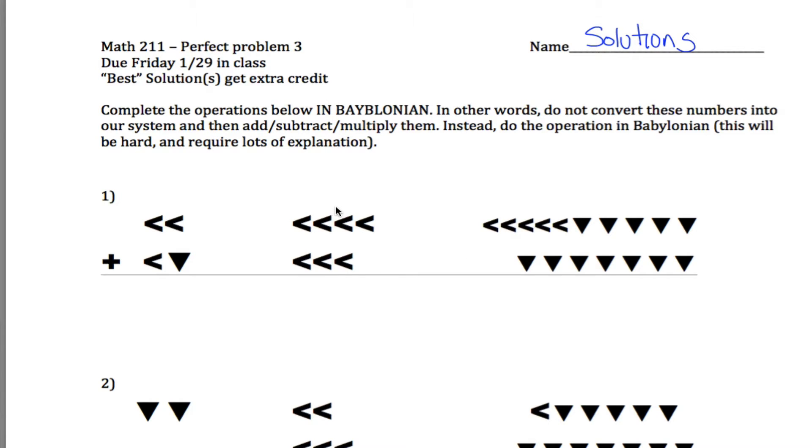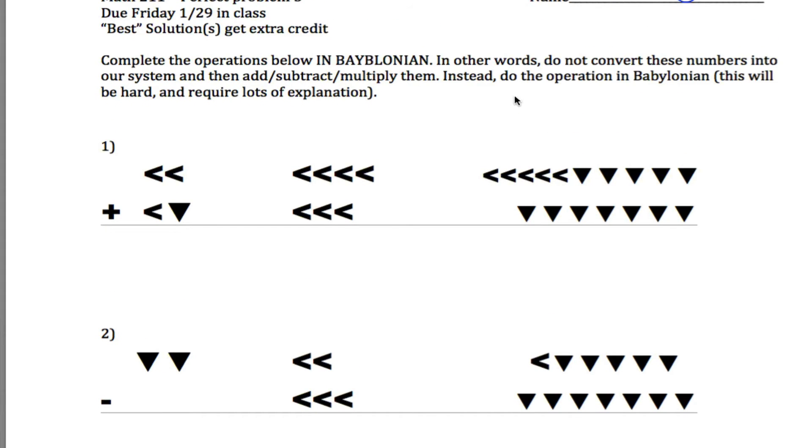Solutions for the third perfect problem for Math 211. The basic idea is to add, subtract, and multiply in Babylonian. So don't convert these into numbers you're more familiar with. Instead, work with these in their current symbols, in Babylonian.